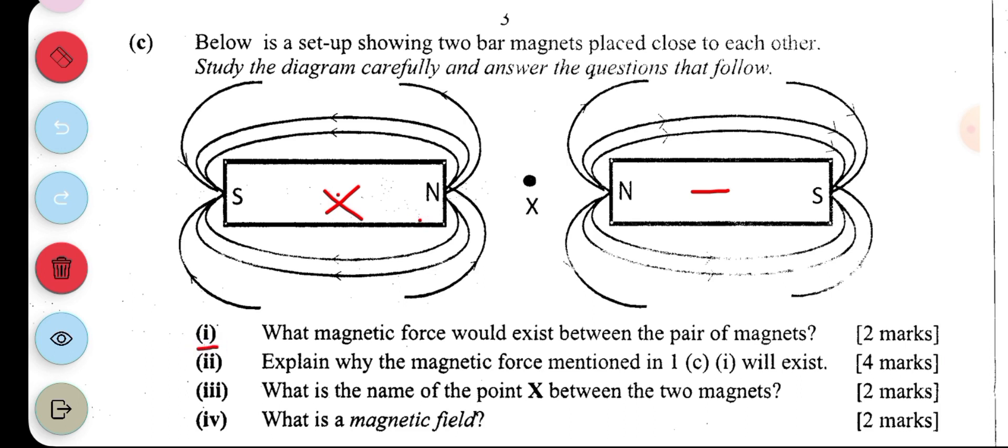And we have questions that follow. What magnetic force would exist between the pairs of magnets? So the force that will exist is actually a repulsive force. We all know it's magnetic force, yes, but it's a repulsive force under the magnetism.